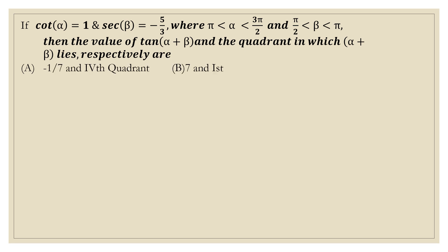We have four options: option A, option B, option C, and option D. These options give the value of tan(α + β) and the quadrant where it lies.